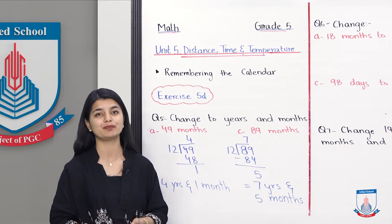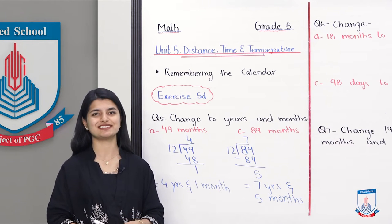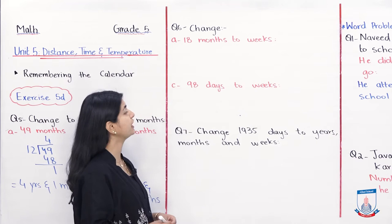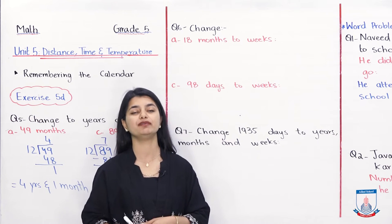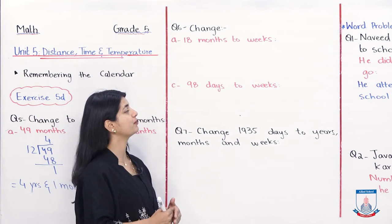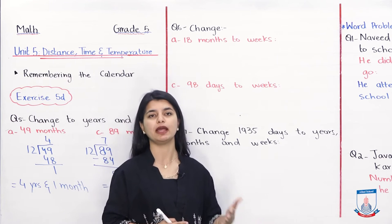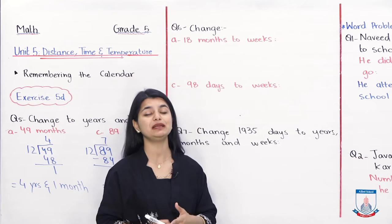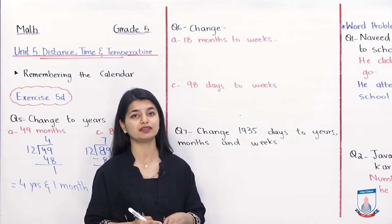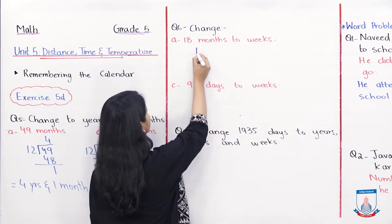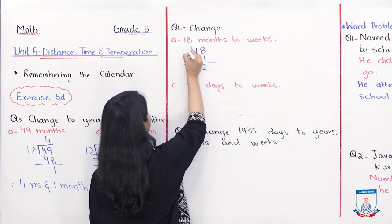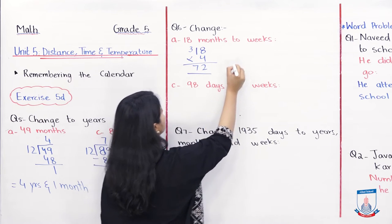Now let's discuss Question 6: Change units. In this part, 18 months needs to be converted to weeks. Here we are going from a bigger unit to a smaller unit, so we will multiply. How many weeks are in a month? Normally 4 weeks. So we will multiply: 18 times 4. Working it out: 4 eights are 32, carry 3, and 4 ones is 4 plus 3 equals 7. So the answer is 72.